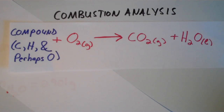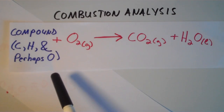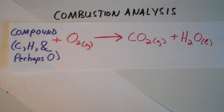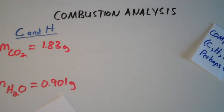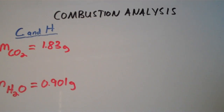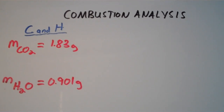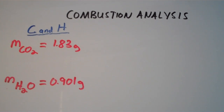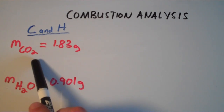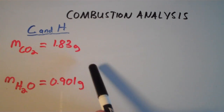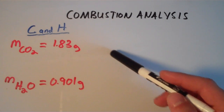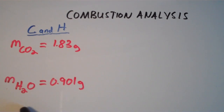We're going to work through a problem in which we try to determine the empirical formula of a compound from combustion analysis. Suppose we carry out a combustion reaction with a compound that contains carbon and hydrogen, and we get that the mass of CO2 is 1.83 grams and the mass of H2O is 0.901 grams.